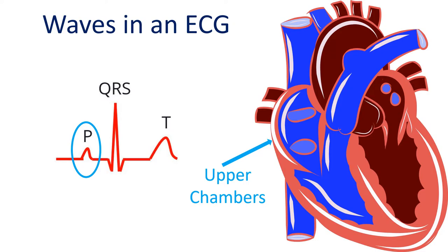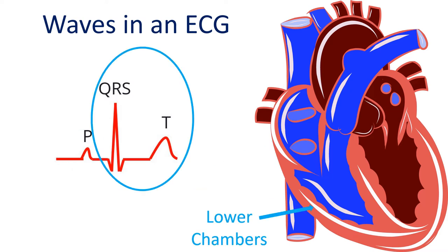The contraction of the upper chambers of the heart starts soon after the beginning of the P wave, which represents the electrical activity of the upper chambers. QRS complex and T wave are the electrical signals from the lower muscular chambers of the heart. ECG changes in a heart attack are usually manifest in these waves.